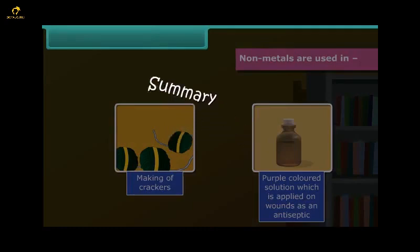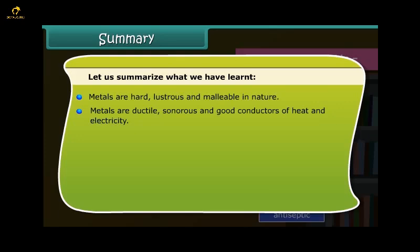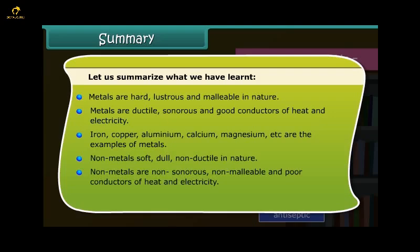Summary: Metals are hard, lustrous, and malleable in nature. Metals are ductile, sonorous, and good conductors of heat and electricity. Iron, copper, aluminium, calcium, magnesium etc. are examples of metals. Non-metals are soft, dull, and non-ductile in nature. Non-metals are non-sonorous, non-malleable, and poor conductors of heat and electricity. Sulfur, carbon, oxygen, phosphorus etc. are examples of non-metals.